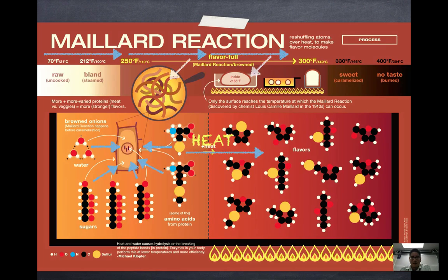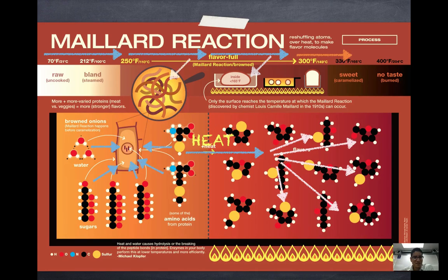So we add heat to the onion, and the reshuffling of atoms occurs. But the really cool thing about this particular reaction is that they don't just randomly reshuffle and attach to another atom, but they actually make very specific flavor profiles. So an onion in its raw state, or even just steamed with boiling water, you don't end up with a lot of flavor. But when you add a little bit of heat, they will actually rearrange and create different flavors.